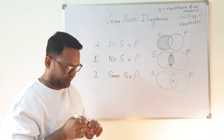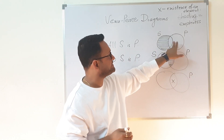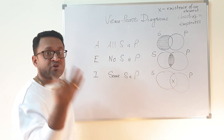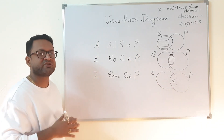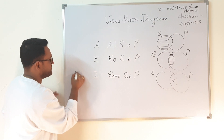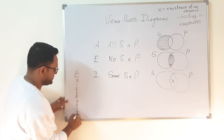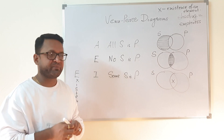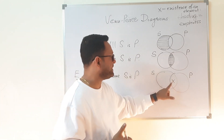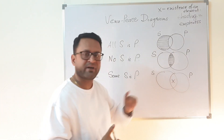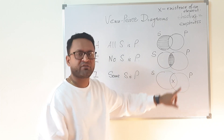We are non-committal about whether anything exists in the other parts — we do not claim anything about the exclusive regions of S or P. But when we say 'some S is P' we do claim existence, which is why particular propositions are also called existential propositions — they assert the existence of members of the subject class. So for 'some S is P' we place the cross mark in the intersection, asserting at least one thing exists in the common part of S and P.